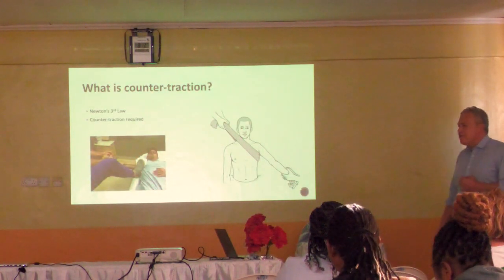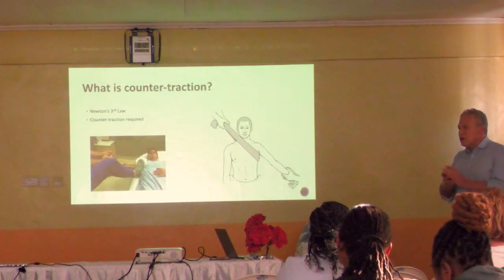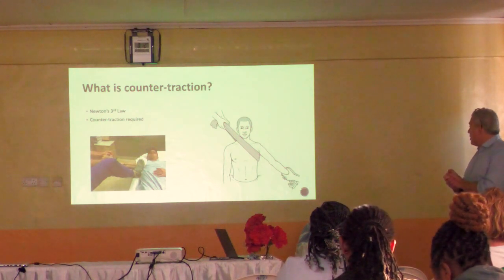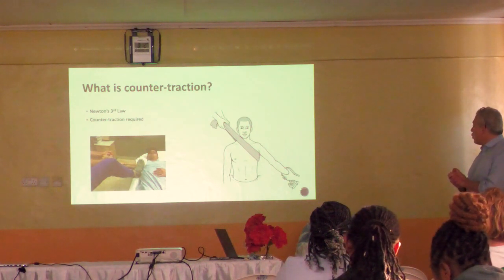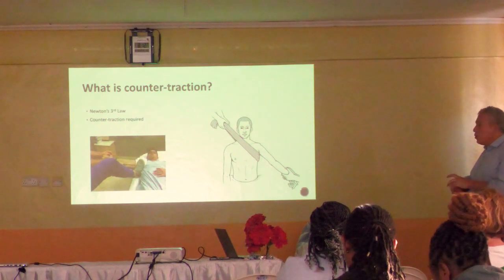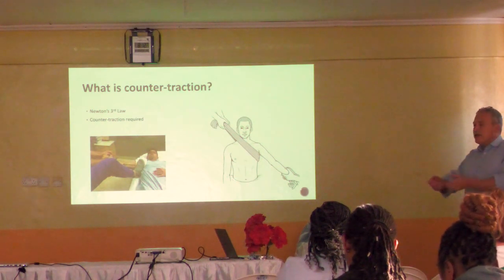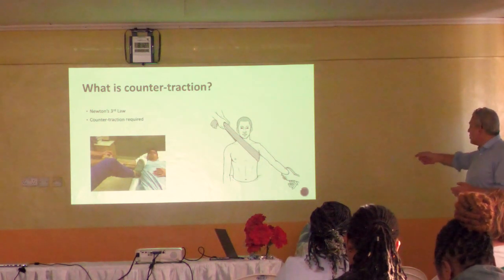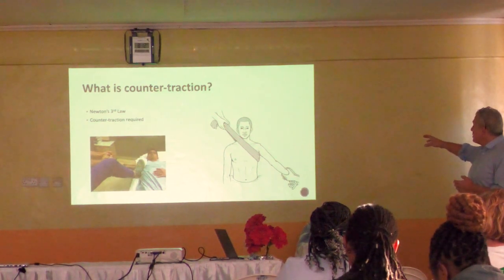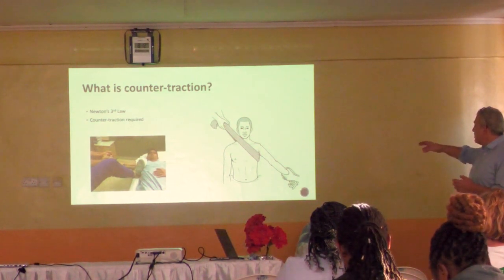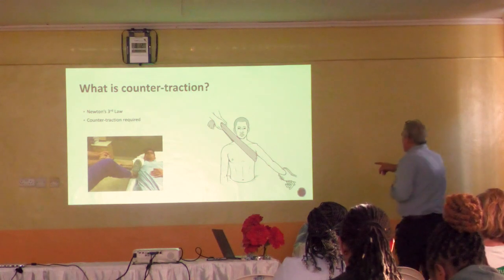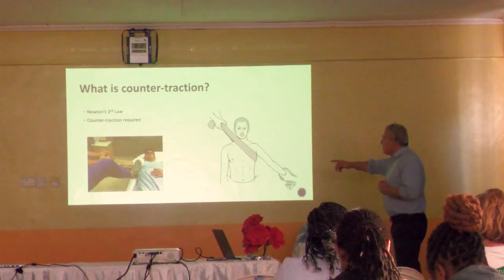When you apply traction, don't forget Newton's third law - you always have to have counter-traction. In the case of a shoulder dislocation, you can pull on the arm to try and reduce it, but you'll pull the patient straight off the bed. You need another way of stopping the patient moving - you need counter-traction, so in this case there's a big bandage holding the patient there.